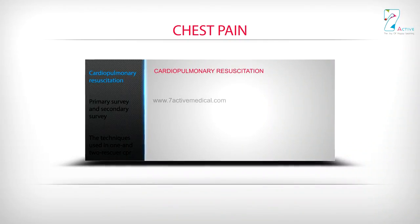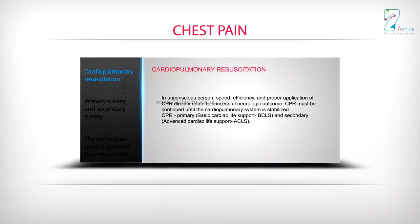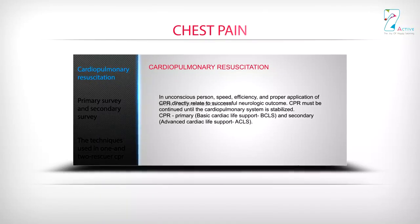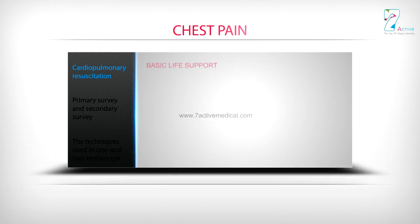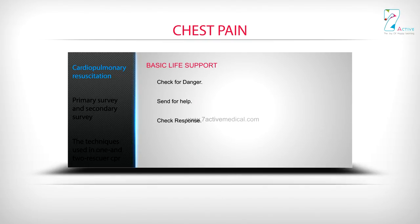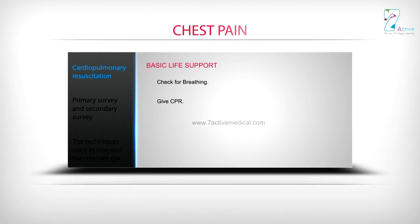Cardiopulmonary resuscitation. In an unconscious person, speed, efficiency and proper application of CPR directly relate to successful neurological outcome. CPR must be continued until the cardiopulmonary system is stabilised. CPR comprises primary (Basic Cardiac Life Support — BCLS) and secondary (Advanced Cardiac Life Support — ACLS) surveys. Basic life support steps: check for danger, send for help, check response, check airways, check for breathing, give CPR, and apply defibrillator.